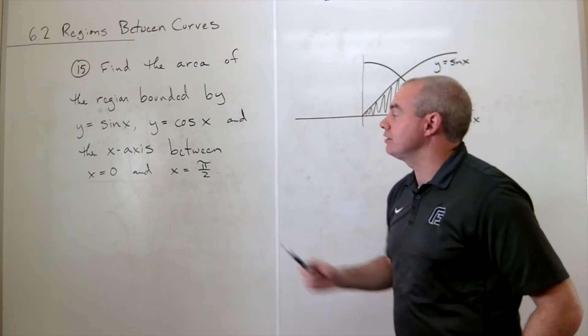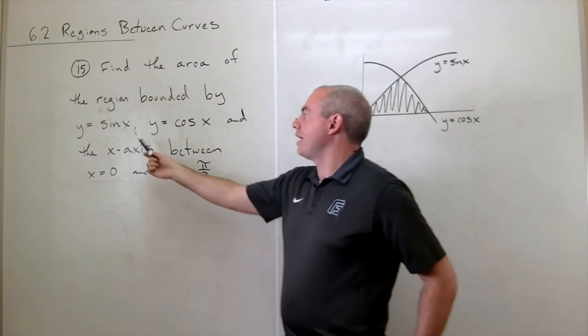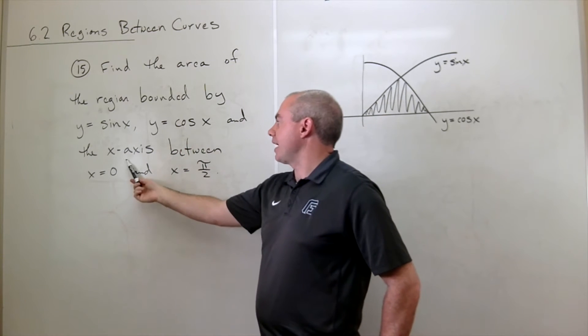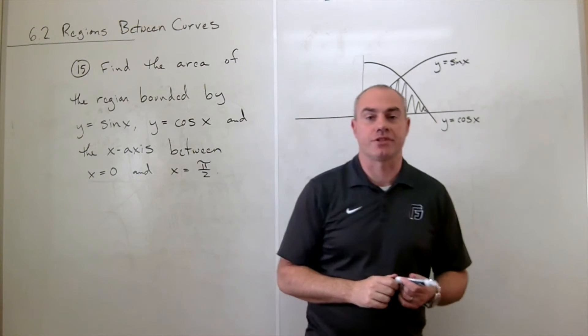In problem number 15, we'd like to find the area of the region bounded by y equals sine of x, y equals cosine of x, and the x-axis between x equals 0 and x equals pi over 2.